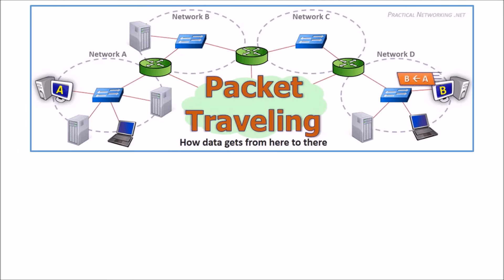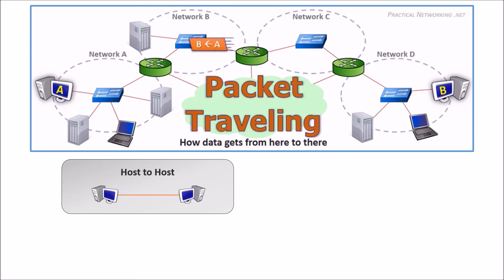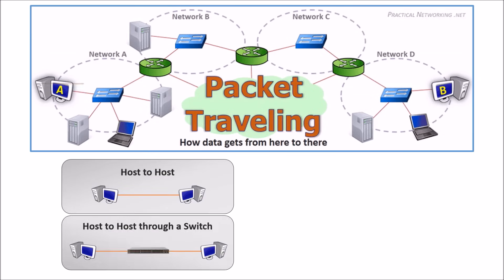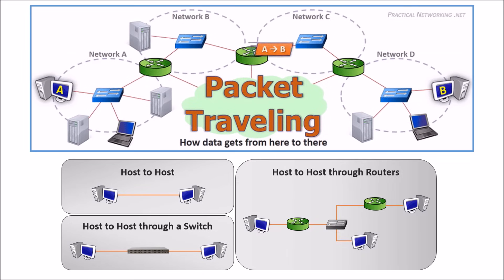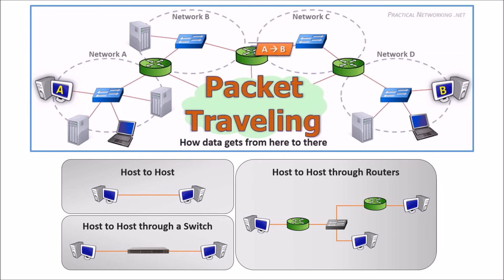In this series, we talked about everything that happens for two directly connected hosts to speak to each other. Next, we talked about everything that happens when you add a switch to the middle. Then we talked about everything that happens when you add routers to the mix. In this video, we will combine all these lessons as we discuss everything that happens to get a packet from a host, through a switch, then a router, then another switch, then finally to another host. I highly recommend reading through the article series in order to get the most out of this video. Let's get started.